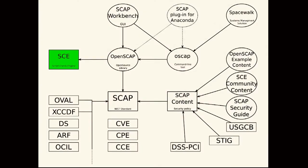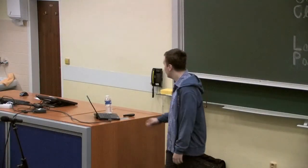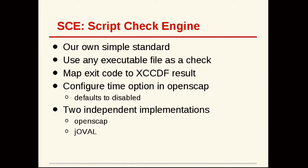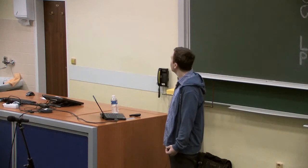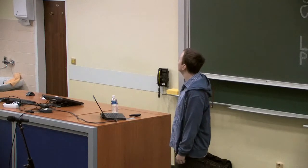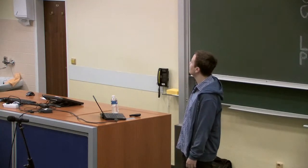As part of the OpenSCAP project, we've created a new simple standard called SCE - Script Check Engine. We were trying to address the difficulty of creating OVAL content - it's a very specific language almost nobody outside the security engineering group knows about. SCE just uses bash scripts or any executable file, so you can write checks in your favorite language, and the exit codes are mapped to XCCDF results. It's a configure-time option in OpenSCAP, defaults to disabled, but enabled in Fedora packages. There are actually two independent implementations as it was adopted by another SCAP project called jOVAL.